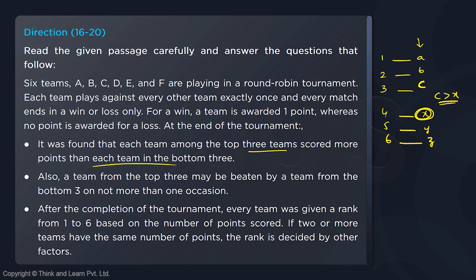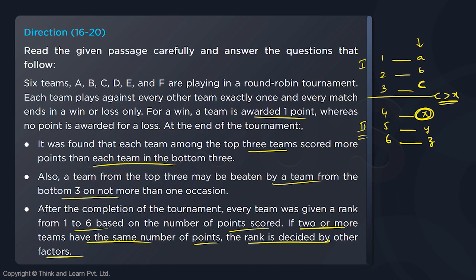That is the meaning of the statement. Also, a team from the top three may be beaten by a team from the bottom three on not more than one occasion. So from group 2, maximum one team only can win against a team from group 1. And then we have a third statement: after the completion of the tournament, every team was given a rank from 1 to 6 based on points scored. If two or more teams have the same points, rank is decided by other factors. Clearly it is 1 point for a win and no points for a loss — there is no draw or tie.